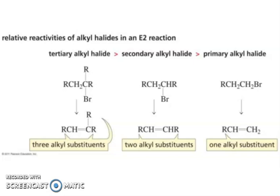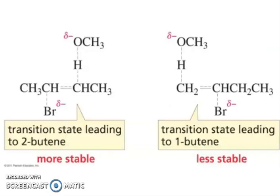Look here: three alkyl substitutions in the case of tertiary; in the case of secondary, two alkyl substitutions; and in the case of primary, one alkyl substitution. So, the transition state leading to 2-butene is more stable, and the transition state leading to 1-butene is less stable.